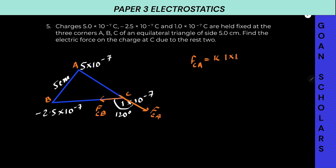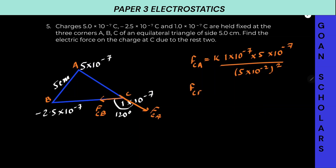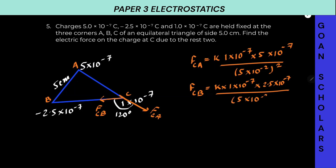Charge on C is 1 × 10⁻⁷, charge on A is 5 × 10⁻⁷, divided by the separation squared. The separation is 5 cm, so (5 × 10⁻²)². Now for FCB — force on C due to B — that equals K times charge on C (1 × 10⁻⁷) times 2.5 × 10⁻⁷, divided by (5 × 10⁻²)². I am not taking the negative sign because we have already accounted for direction in the arrows.